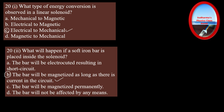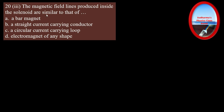Question three: the magnetic field lines produced inside the solenoid are similar to that of which? Read all options: a bar magnet, a straight current-carrying conductor, a circular current-carrying loop, or an electromagnet of any shape. Different shaped electromagnets have different shaped magnetic fields. We know that a solenoid produces a magnetic field very similar to that of a bar magnet — option A.